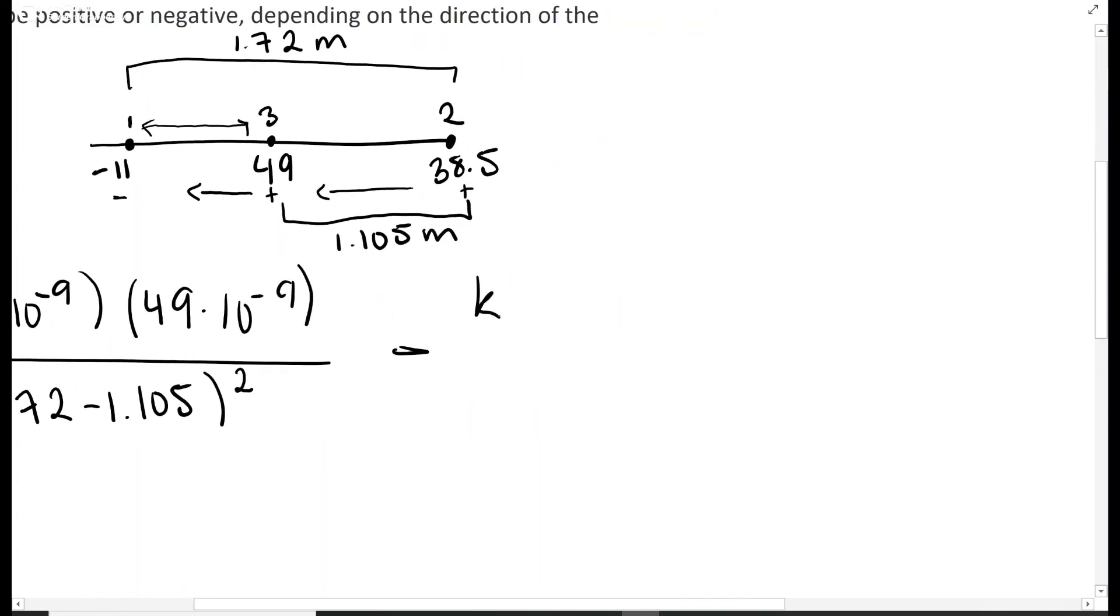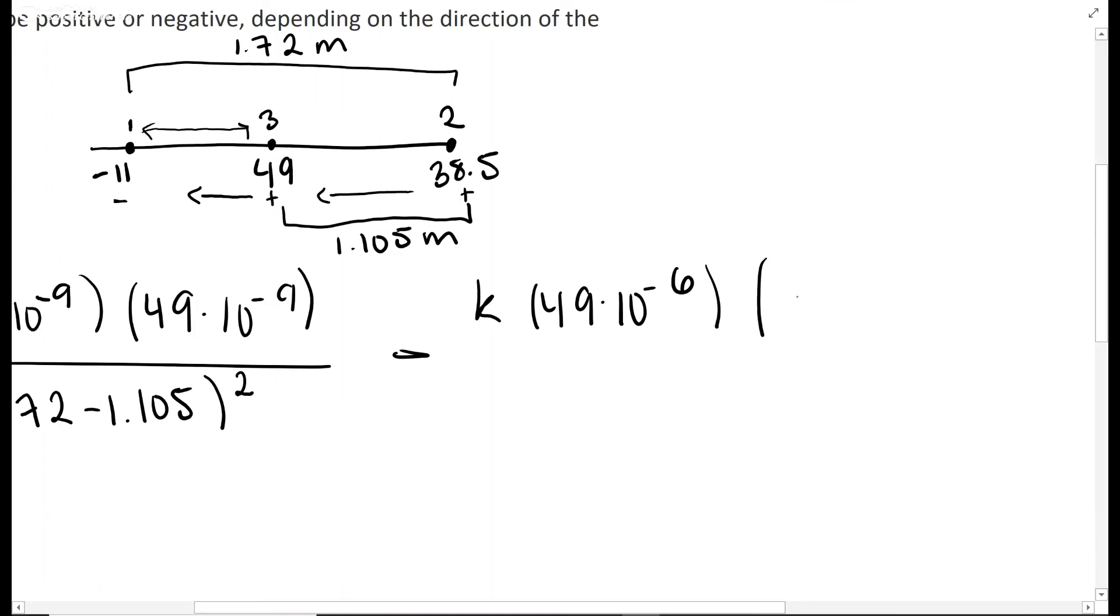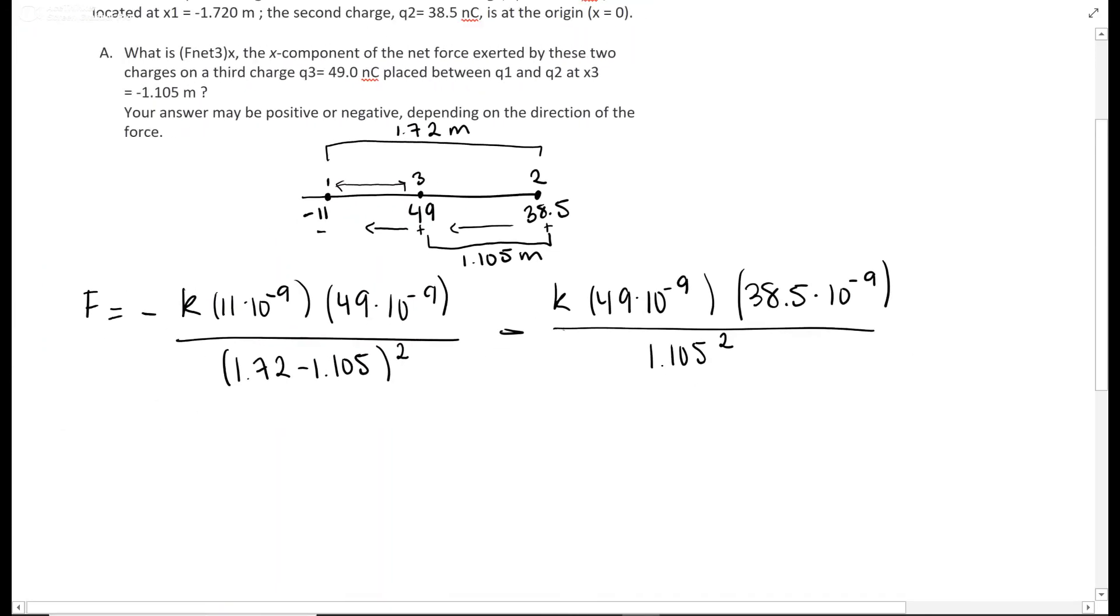It's minus - it's going to the left - k times 49 times 10 to the negative 6 times 38.5 times 10 to the negative 9th, over the distance between those, which is 1.105 meters squared.